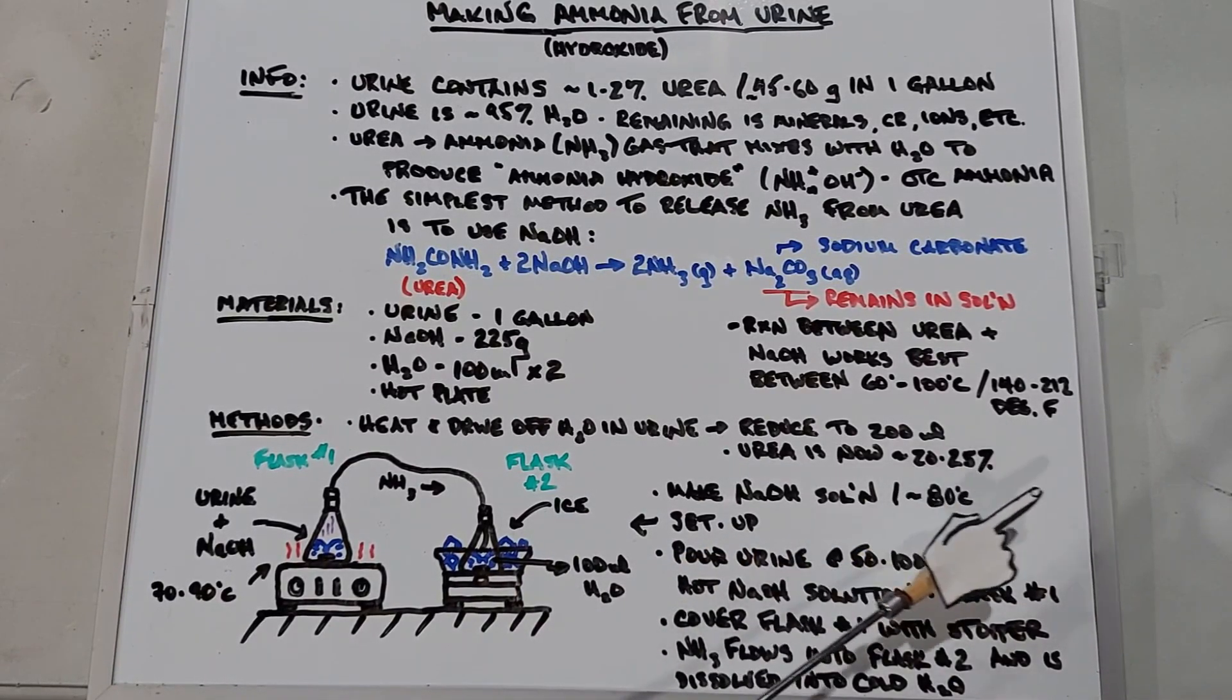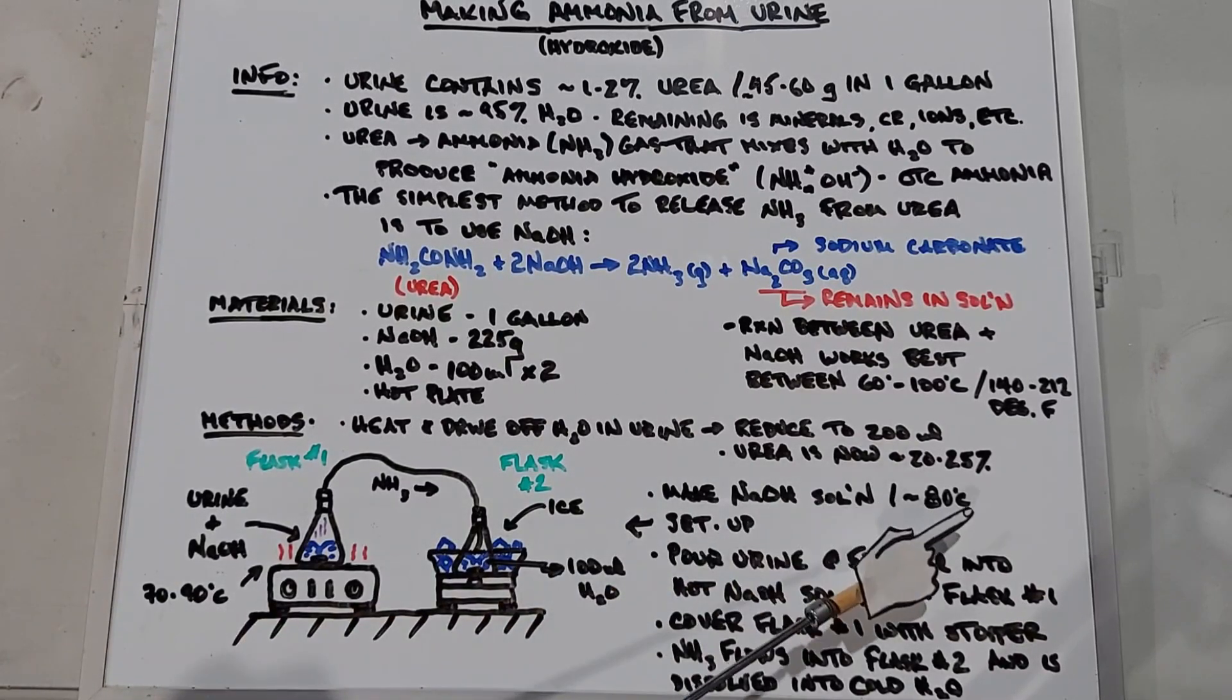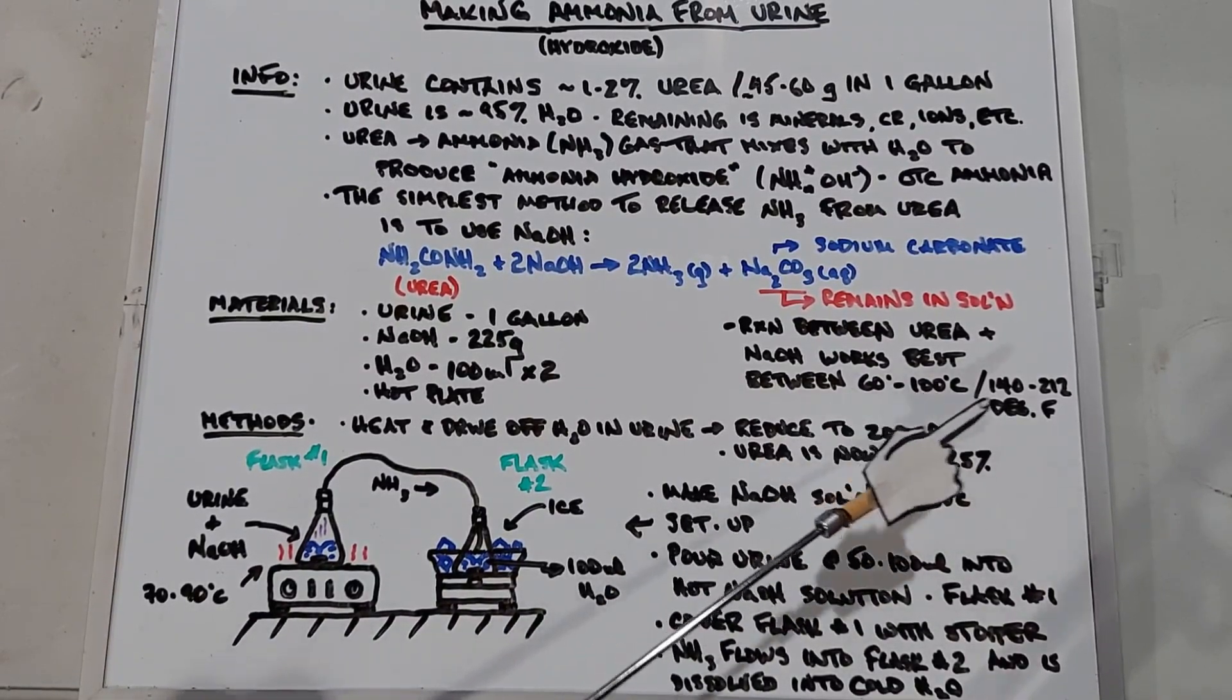Here's our setup. We're going to have two plates here with magnetic stirrers. This first one's a hot plate, we're going to have the sodium hydroxide in there at approximately 80 degrees Celsius because the reaction occurs best around that area.